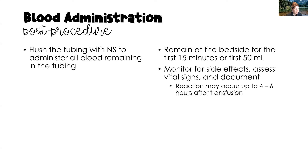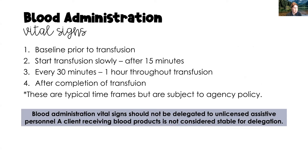Post-procedure: flush the tubing with normal saline to administer the remaining 20–30 mL of blood in the line. Clamp the blood side, unclamp the normal saline side, and run saline through. For vital signs: obtain a baseline set before transfusion, another set after the first 15 minutes, then every 30 minutes to one hour throughout the transfusion per agency policy, and a final set once the transfusion is complete.